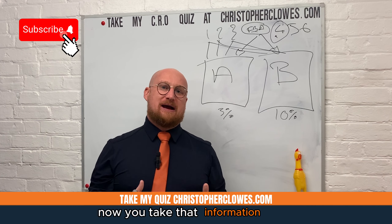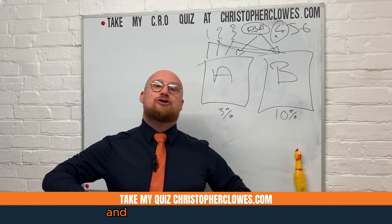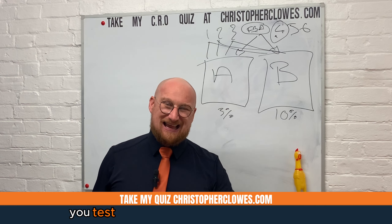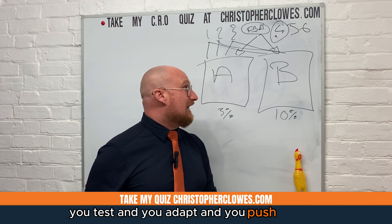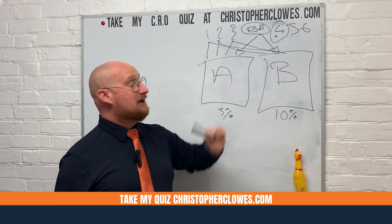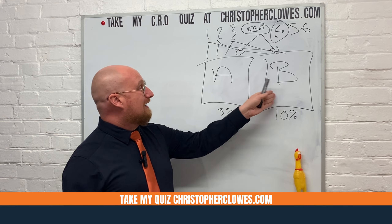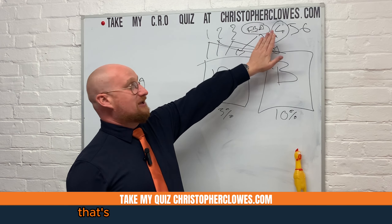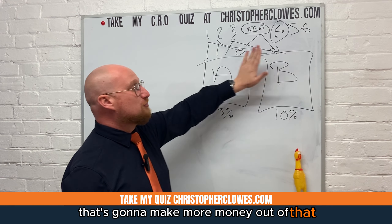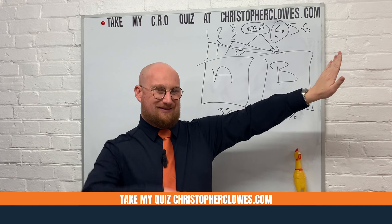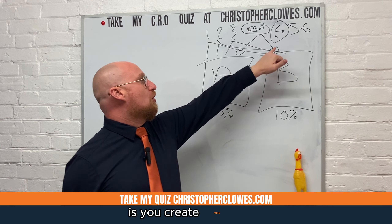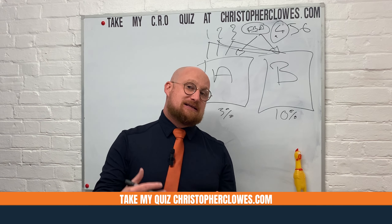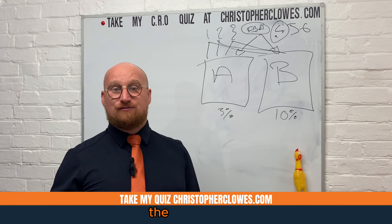You take that information and start rolling it out. This is how you turn mud into money — you test, you adapt, and you push out. If Facebook ad four and landing page B are the best, that's going to make you more money. You scrap all the others, then create more variations of ad four and landing page B, and keep testing until you get the right method.